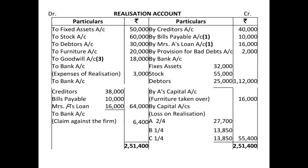After comparing the debit and credit sides, the debit side is more than the credit side, meaning there is a loss of Rs. 55,400, distributed among partners A, B and C in the ratio of 2:1:1. A gets 2/4 = 27,700; B gets 1/4 = 13,850; and C gets 1/4 = 13,850.